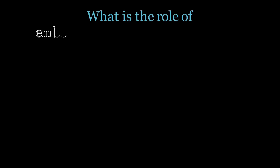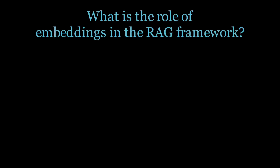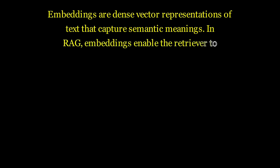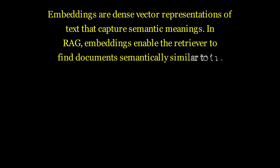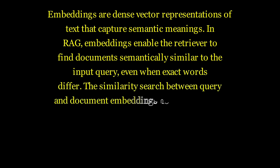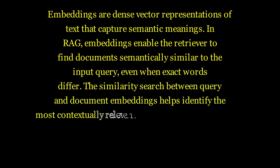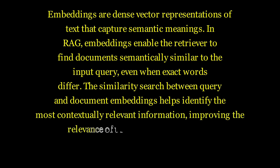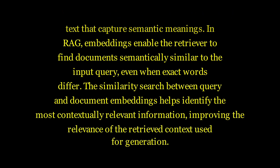What is the role of embeddings in the RAG framework? Embeddings are dense vector representations of text that capture semantic meaning. In RAG, embeddings enable the retriever to find documents semantically similar to the input query, even when exact words differ. The similarity search between query and document embeddings helps identify the most contextually relevant information, improving the relevance of the retrieved context used for generation.